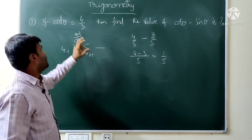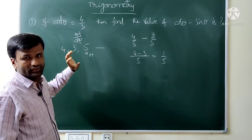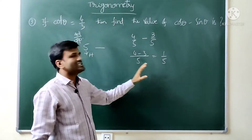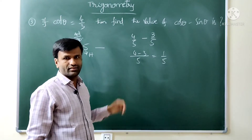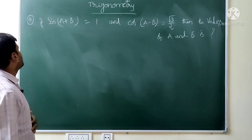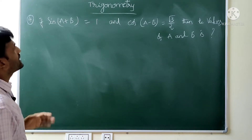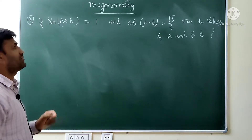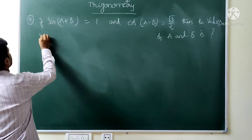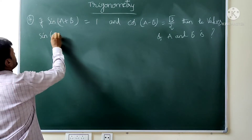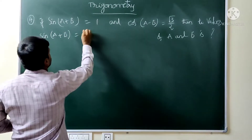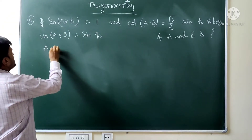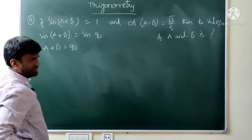Without considering the quadrants, the direct value gives the answer 1 by 5. This is the right answer. Fourth question: if sin(A + B) equals sin(A - B) equals √3 by 2, then the values of A and B are? A + B comes to 90 degrees.